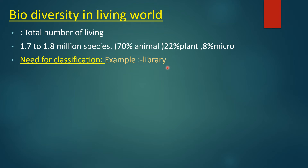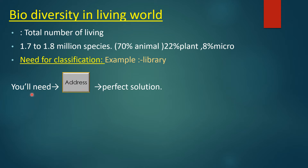पुराने जितने भी scientists थे, उन्होंने classification किया है, जिससे हम उनकी proper study कर पाएं. Classification एक perfect solution होता है, और इसमें एक address की requirement होती है, जैसा कि हमने library वाले example में देखा. Classification के aims हैं: it helps to understand diversity in plants and animals, identify the organism, and understand the origin of the organism.